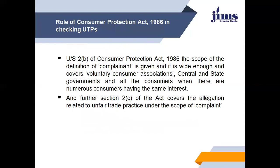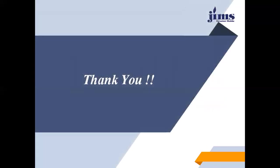Now let's look at the role of the Consumer Protection Act 1986 in checking unfair trade practices. Under Section 2(b) of the Consumer Protection Act 1986, the scope of the definition of 'complainant' is wide enough to cover voluntary consumer associations, central and state governments, and all consumers where numerous consumers share the same interest. Further, Section 2(c) of the Act covers allegations related to unfair trade practices within the scope of a complaint.